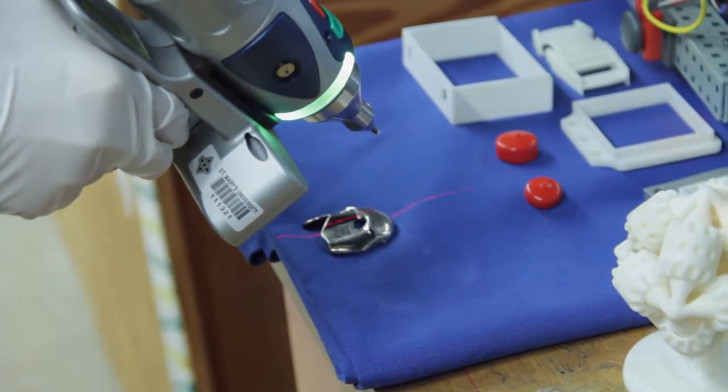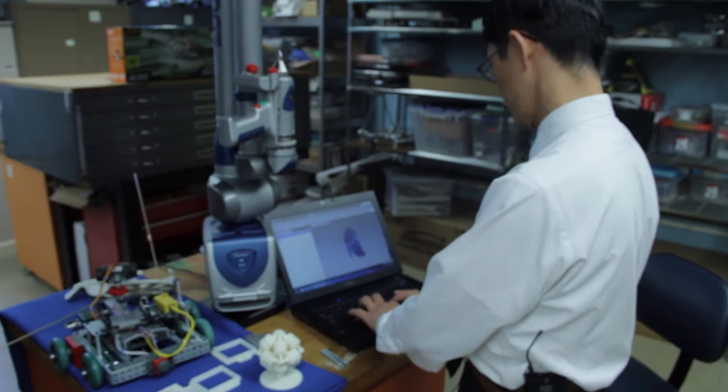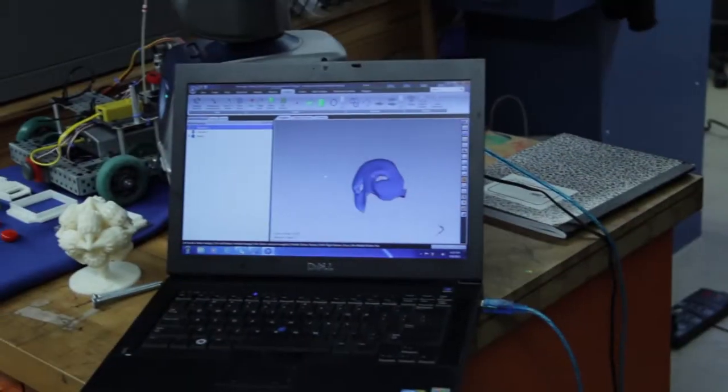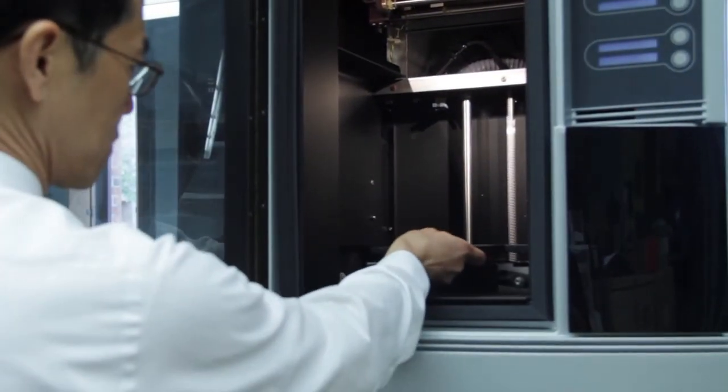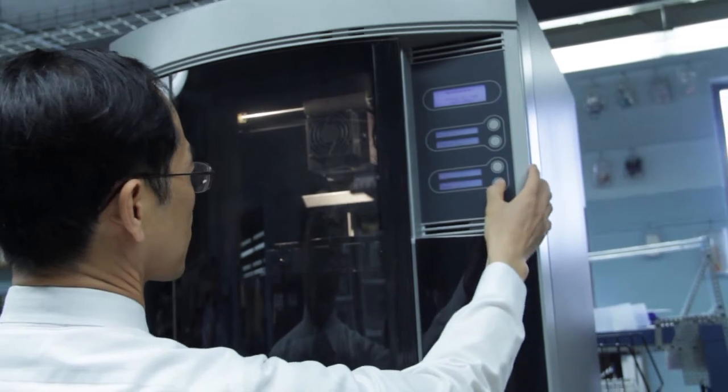Just pick any object, maybe a Phantom of the Opera keychain, give it a quick scan with the FerroEdge laser scanner, specify the size and dimensions on a computer-generated likeness, load the cartridge with a highly durable polymer, and start it up.